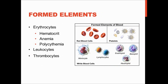Let's talk more about the formed elements, the cells in your body. Erythrocytes are your red blood cells — 'cytes' means cells, 'erythro' means red. Leukocytes are your white blood cells — 'leuko' means white. And thrombocytes are your platelets. The ability to measure red blood cells as a percentage of your whole blood is your hematocrit. If you have less than the normal amount of red blood cells, you have anemia, and if you have more, you have polycythemia.